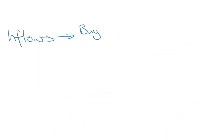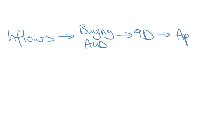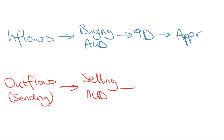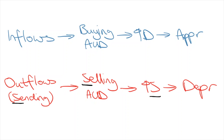To sum it up, inflows lead to foreigners buying the Aussie dollar, which leads to an increase in demand and appreciation. Outflows, or sending money, involves selling the Aussie dollar, which leads to an increase in supply and a depreciation. The way I remember this is: sending (S) leads to selling (S), which then leads to an increase in supply (S).